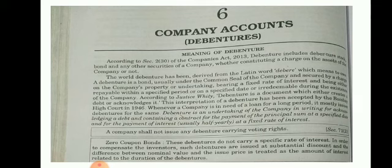A debenture is secured by the common seal of the company and a charge on the company's property or undertaking, bearing a fixed rate of interest, and being either repayable within a specified period or on a specified date. It is a bond and loan that a company issues to the public, on which interest is paid at a fixed rate for a fixed period. Debentures are long-term creditors for the company.